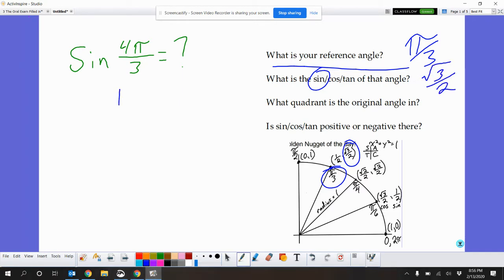Next, I need to determine the quadrant. So in my head, I'm thinking, okay, well, there's pi. 4 pi over 3 is pi plus a little bit more, because this is 3 pi over 3. So a little bit more puts it in quadrant 4.